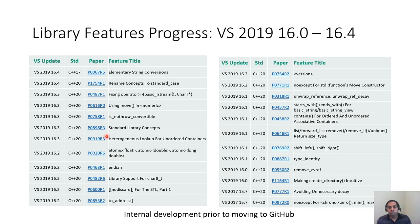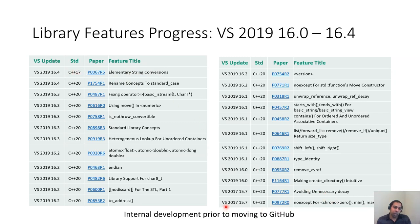These are the features that have been completed prior to moving to GitHub. The table shows the Visual Studio update each feature has been implemented in. All of them are C++20 except the first one which is C++17 — elementary string conversion was the last C++17 feature. We started releasing C++20 features around VS 2017 15.7, and since then we have been working on implementing C++20 features.